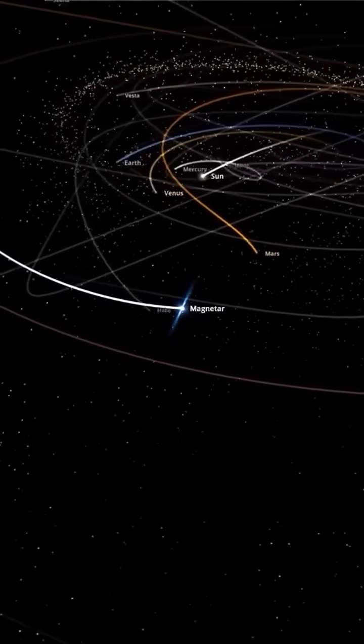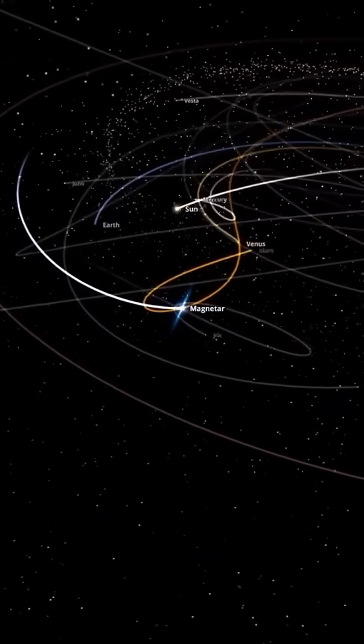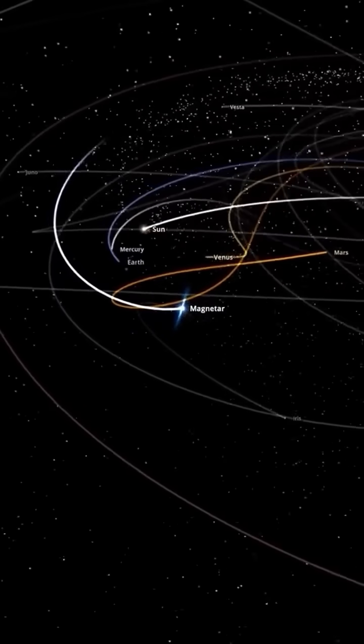Its gravity would destabilize planetary orbits, pulling some planets closer while flinging others far away. The stable orbits we rely on would collapse.